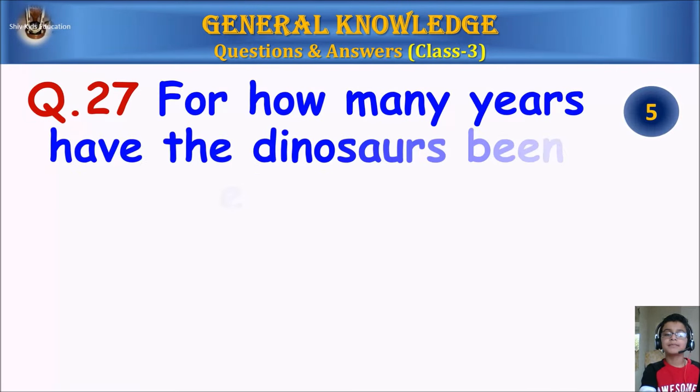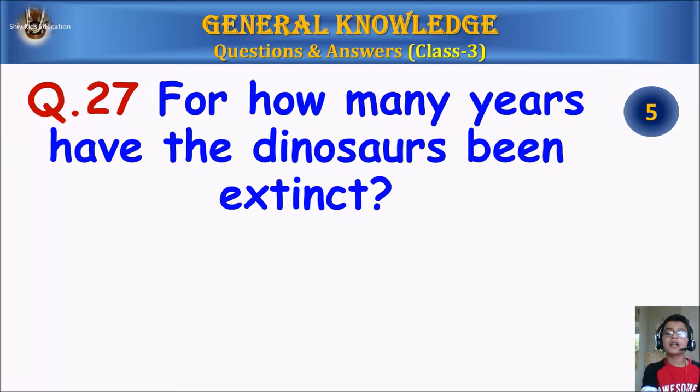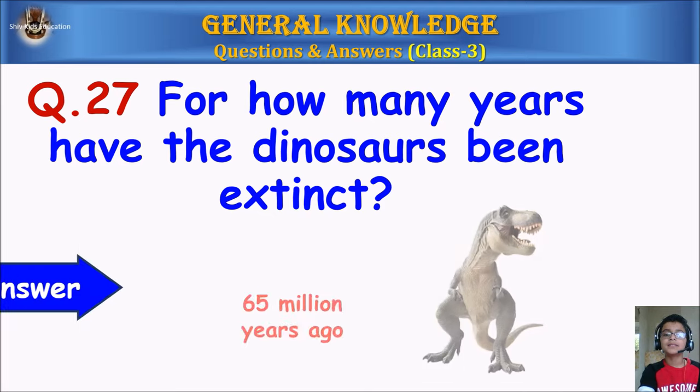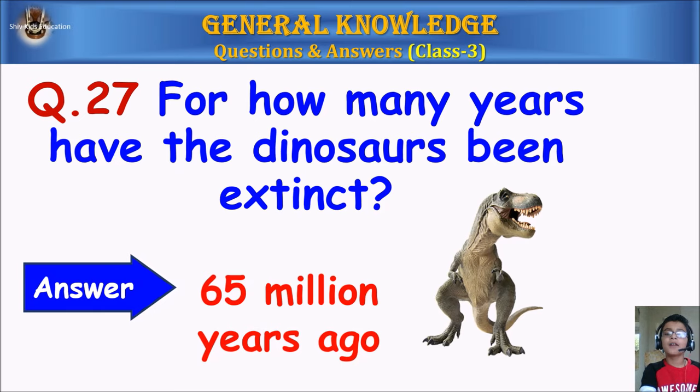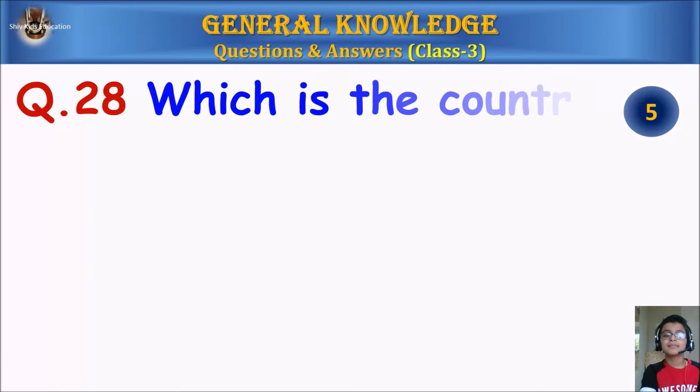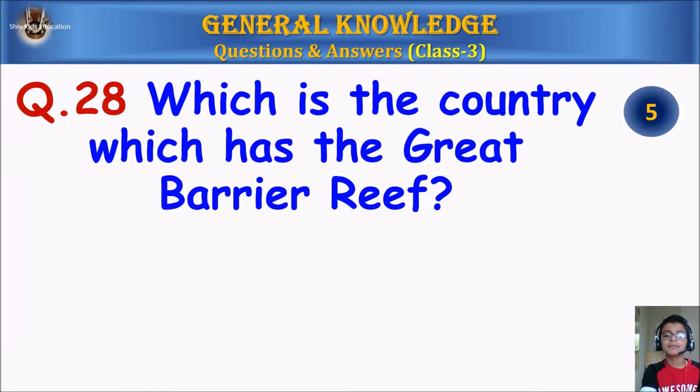Question 27: For how many years have dinosaurs been extinct? Your time starts. Answer: 65 million years ago.